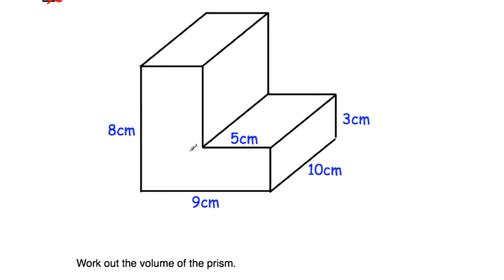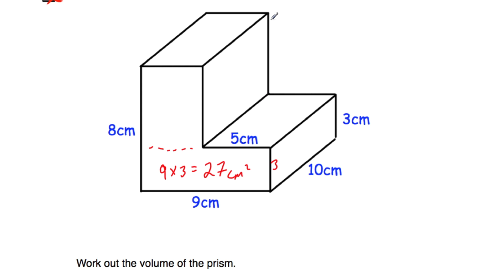So let's find the area of this cross-section. I'm going to divide it into rectangles — I'll cut it across here. I've got this rectangle which is 9 centimetres long, and looking at the measurements, the width is 3. So we do 9 times 3, which is equal to 27 centimetres squared. That's the area of this bottom rectangle. Now, the whole shape has a height of 8 centimetres and this part is 3, so that means the top part must be 5 centimetres.